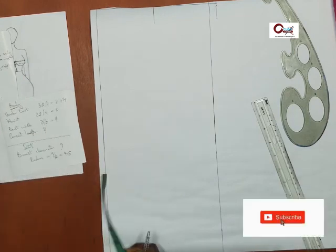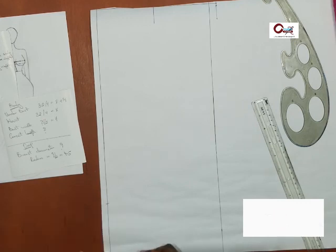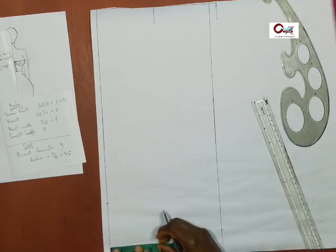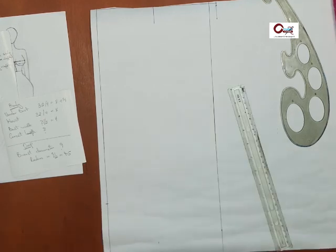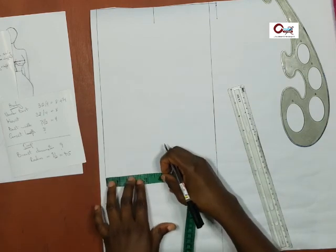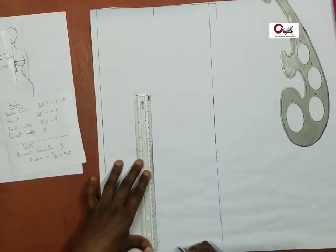Bust width, which is nipple to nipple is eight, divided by two, gives four. I mark four. There's a little gap between the two breasts. I would be using half of an inch for that one because I'm marking on the fold. That's done.